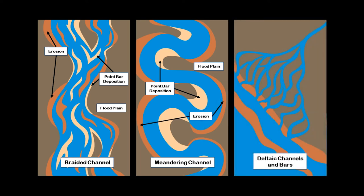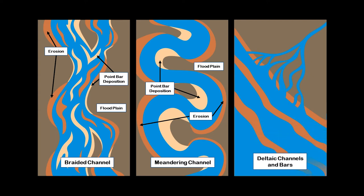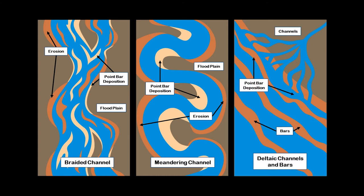Finally, deltaic environments are important for channels and bars for stratigraphic traps. A deltaic environment occurs where rivers carry sediment to an ocean, sea, lake, or generally a body of standing water. A deltaic environment changes shape with ocean levels or tides, erosion and deposition. When buried, a deltaic environment is an important stratigraphic trap.